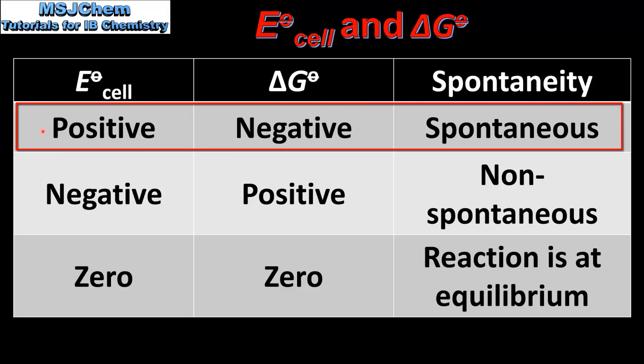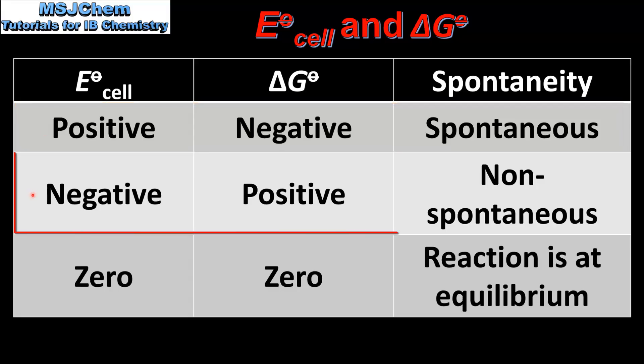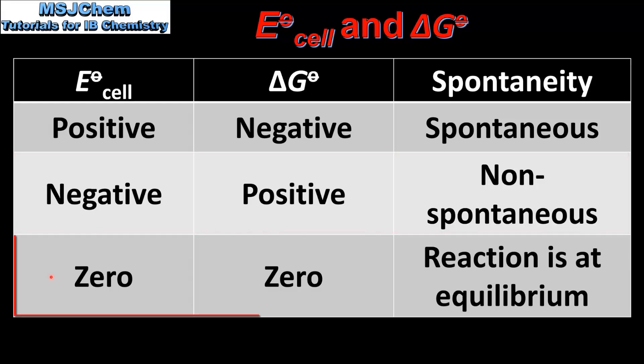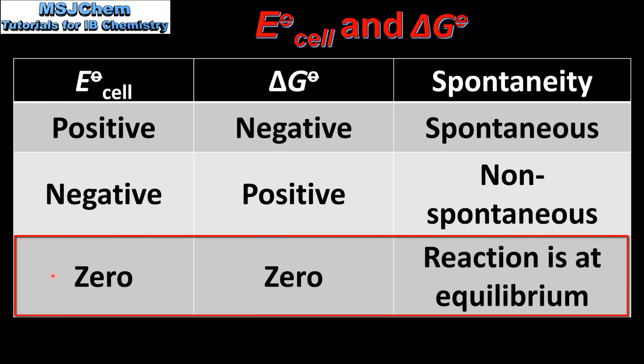If the cell potential is positive, the delta G is negative and the reaction is spontaneous. If the cell potential is negative, the delta G is positive and the reaction is non-spontaneous. And if the cell potential is zero, the delta G is also zero, which means the reaction is at equilibrium.